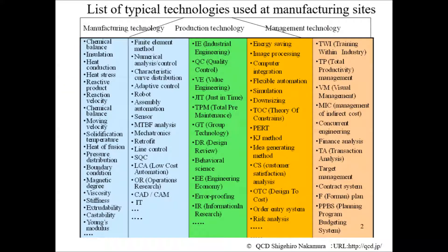Each company will promote making products with full use of developed and accumulated technologies and know-how. This countermeasure is carried out by making full use of many technologies classified as manufacturing technology, production technology, and management technology, as shown in this table.